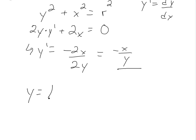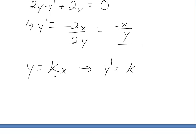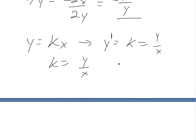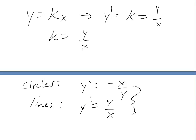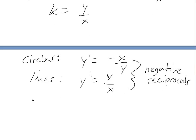For the line y = kx, taking the derivative gives y prime equals k. But rearranging the original equation, k equals y over x. So y prime equals y over x. Comparing the two: for the circles y prime = −x/y, and for the lines y prime = y/x. These are negative reciprocals of each other, so we've proven they're orthogonal.